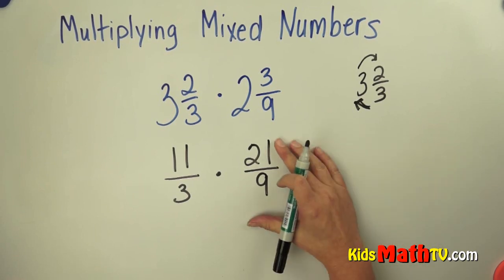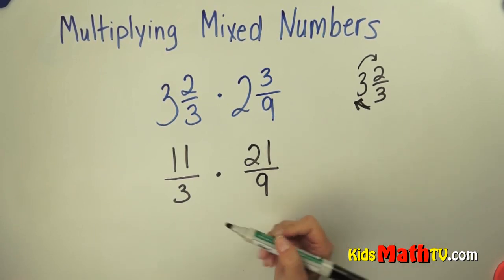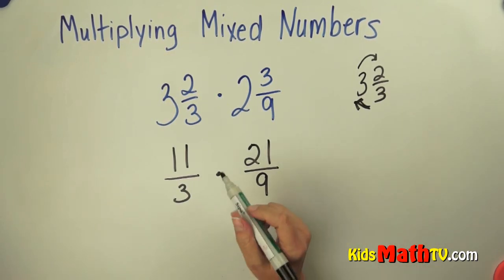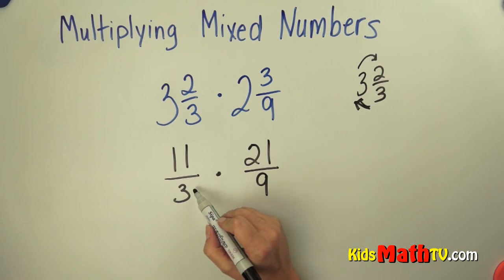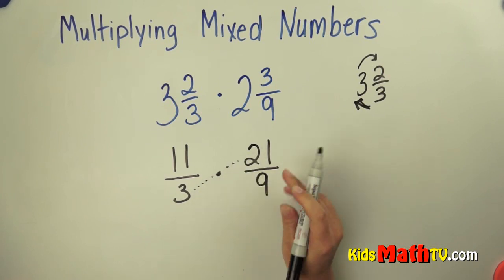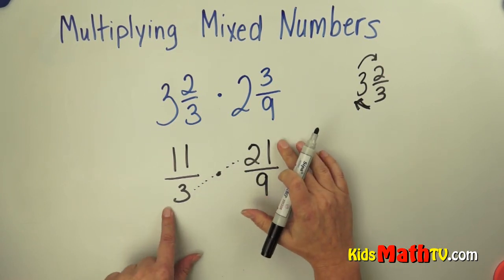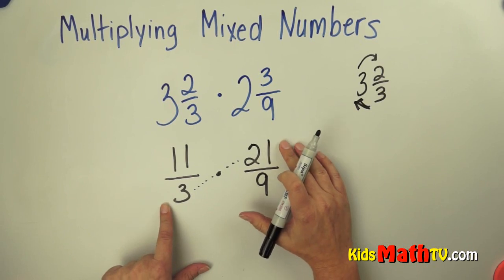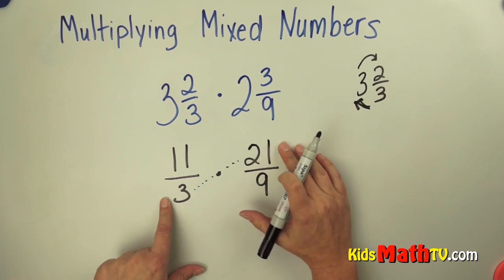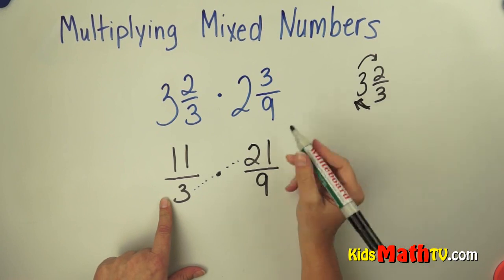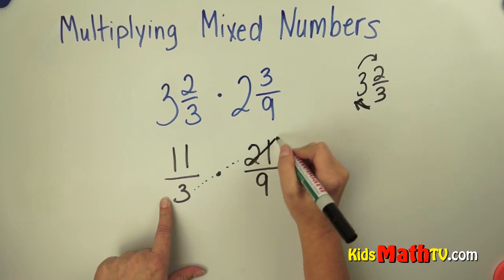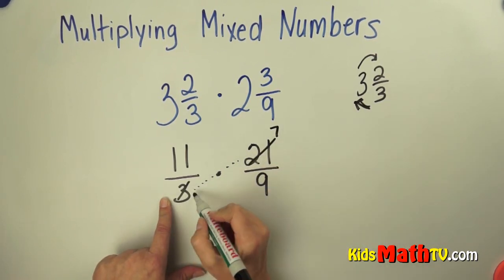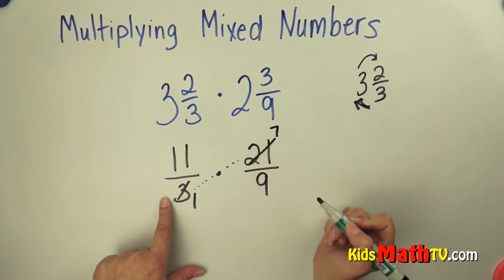Now we simply have multiplying of fractions, and I'm going to look to see if I can do any cross cancelling. I look at my 3 and 21 — they're crossed from each other. Can I simplify? Yes, I can divide both 3 and 21 by 3. Dividing gives me 7 and 1.